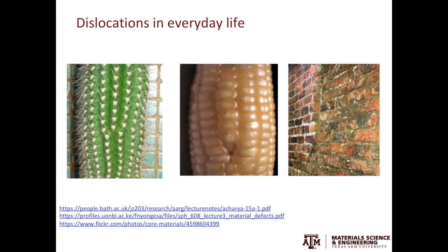Dislocations do not only exist at the atomic level — they are kind of everywhere. You can see edge dislocations in cactus and in corn, and screw dislocations on a brick wall. In the next video, we'll take a closer look at how atoms arrange near the dislocation core and examine the elastic properties of dislocations.